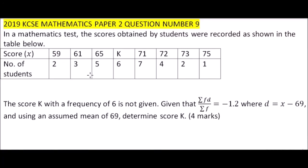2019 question number 9. We are told in a mathematics test the scores obtained by students were recorded as shown in the table below. We have the score row starting from 59, 61 up to 75. We have number of students: 2 in column of 59, 3 in column of 61, and up to 75.